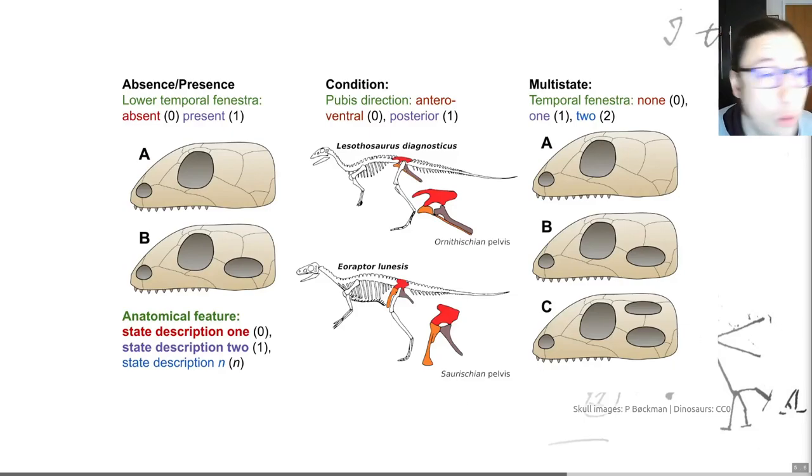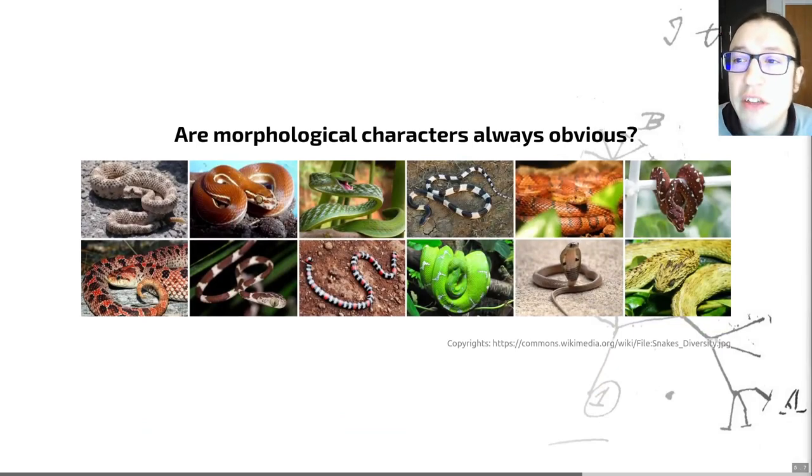This may all sound relatively straightforward. You're like, well, yeah, obviously absence or presence of a hole in the skull is something that you can just look. But in order to establish characters, we have to try and be rigorous. And as I've mentioned, make sure our character states are really, really clear. And that isn't always as easy as it may sound.